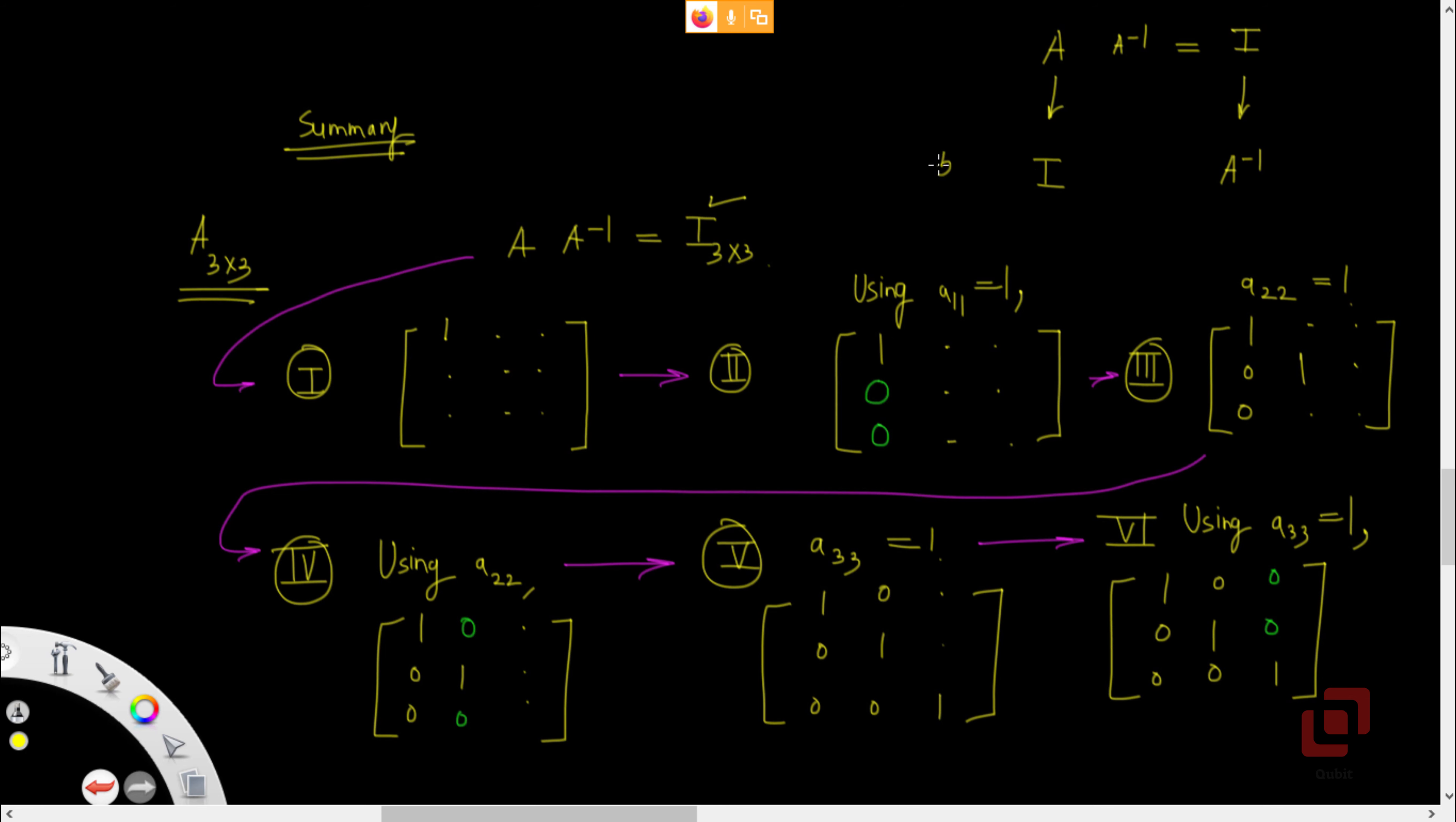That is only 50% of the expected job. You should apply the same transformations on the identity matrix and only then, your job will be 100% done. Is it clear? Okay.